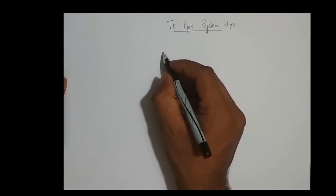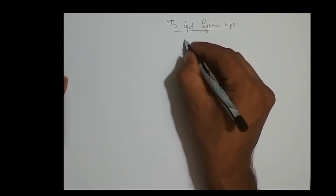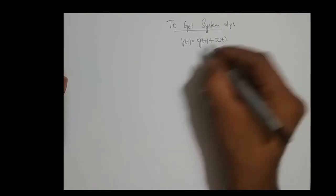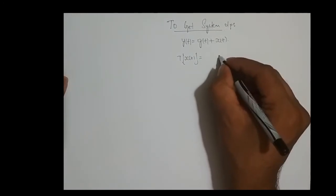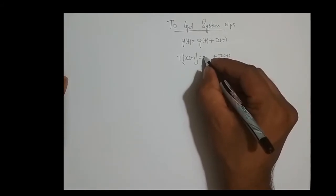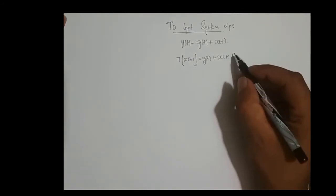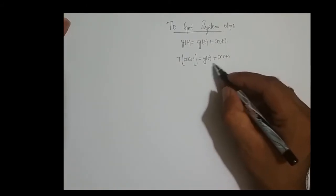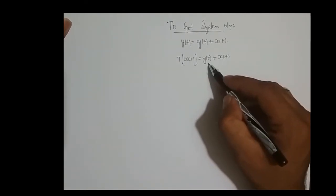Now, as I told you in lecture 2, in order to get the system output I need to understand the system. The system is y of t equals g of t plus x of t, which means transformation of x of t: whatever signal you feed, g of t gets added to it. In the previous example we had x of t times g of t — whatever signal was fed, it was getting multiplied. Now it is getting added. If I feed a sine wave, the sine wave gets added with some arbitrary signal g of t.